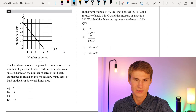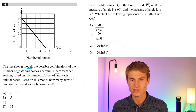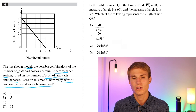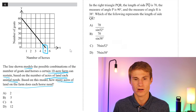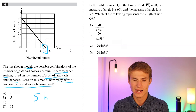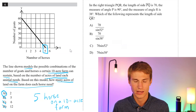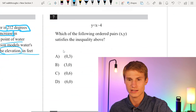Moving on to number 6. A line models the possible combinations of goats and horses a 10-acre farm can sustain based on acres each animal needs. The maximum number of horses on this 10-acre farm is 5. So if we can only have 5 horses on 10 acres, each horse requires 2 acres. Our answer is A.